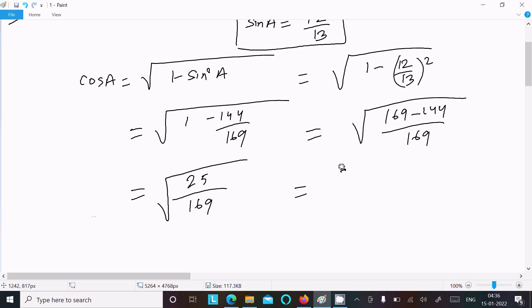This simplifies to 5/13. So the cosA value is 5/13.